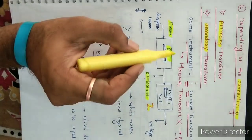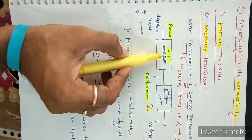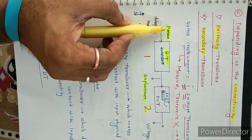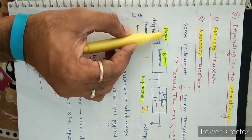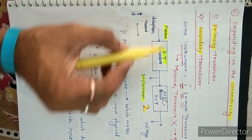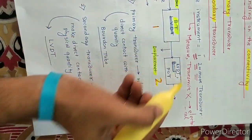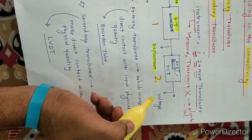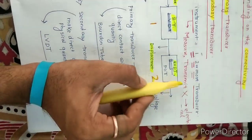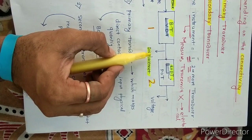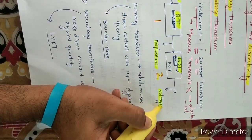Pressure is converted into displacement with the help of the Bourdon tube. The Bourdon tube is a mechanical transducer which converts one type of physical quantity into another type of physical quantity. Then the LVDT converts the displacement into voltage.